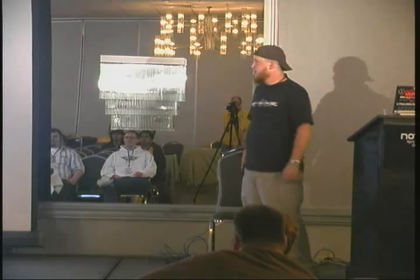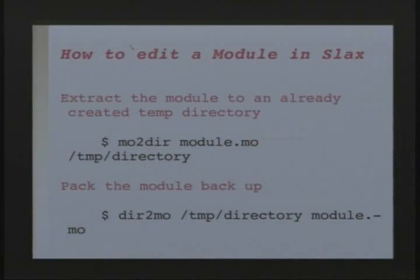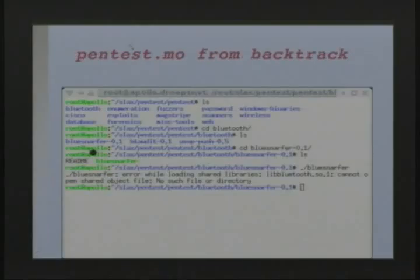How to edit a module: you create a directory, then run 'mo2dir', type the module name, and the directory. It'll load that module into the directory so you can look at it, see what's in it, play around with it, then make your own with dir2mo. For example, this is pentest.mo from Backtrack — you can go to this and say, 'I wish I had some of this stuff from Backtrack.' You can just take it out of there, find all the things, or make your own.